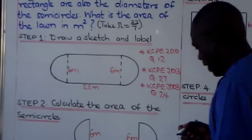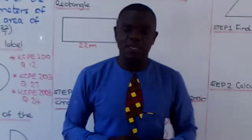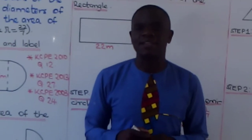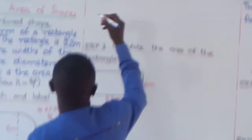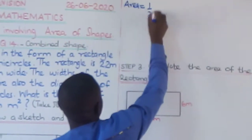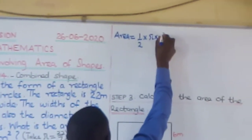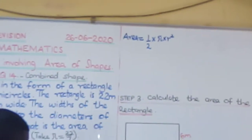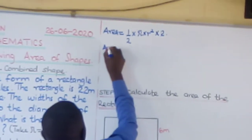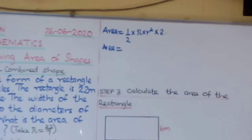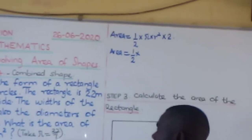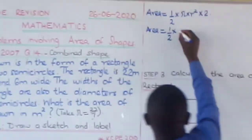Let us begin by writing the formula for the area of a semicircle. I would like somebody to volunteer. Yes, Tyrese — very good. The area of a semicircle is one half times pi times r squared. Note that there are two identical semicircles, so we multiply by two. Now we substitute: we write one half times pi — and we've been told to use pi as 22 over 7, so we write 22 over 7.